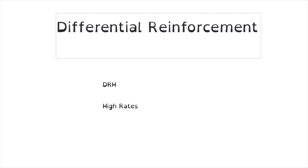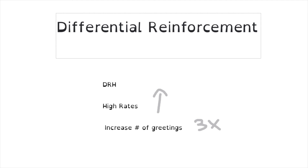DRH is differential reinforcement of high rates — this is for behaviors you want to increase. For example, a child who greets peers only once per day; we want to encourage more greetings. We establish a new level for reinforcement, so with DRH, if they talk to different peers more than three times, they'll get reinforcement. DRH is not a very common schedule — DRA, DRO, and DRI are the most common schedules.